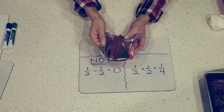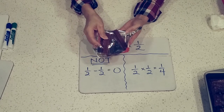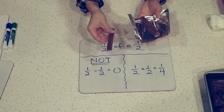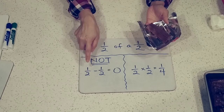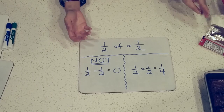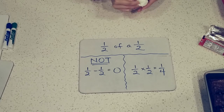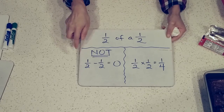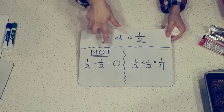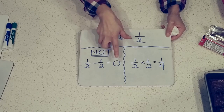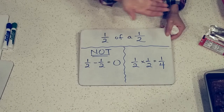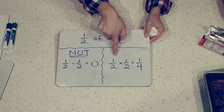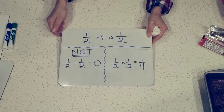When I gave Diego half of what I have left, I still had this much left for myself. So a half minus a half doesn't make sense in this case. When we take a fraction of an amount, we are not subtracting. Half of a half is actually multiplication.